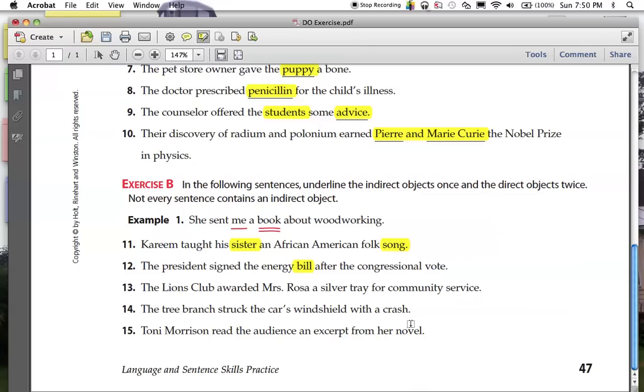Number 13. The Lions Club awarded what? A tray. Direct object. Did they award that tray to or for anyone? Mrs. Rosa. Indirect object.